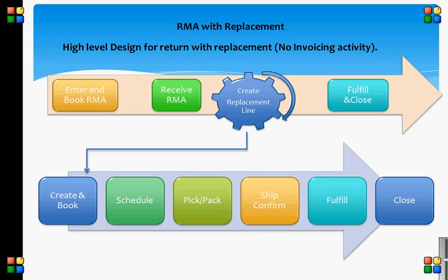By manual process, I mean the user creates the RMA for the product that the customer wants to replace and then creates an outbound line for the replacement product. This can be done in a single order or two separate orders. By automatically, I mean as soon as your order is booked or received, the RMA system should immediately create the replacement line.